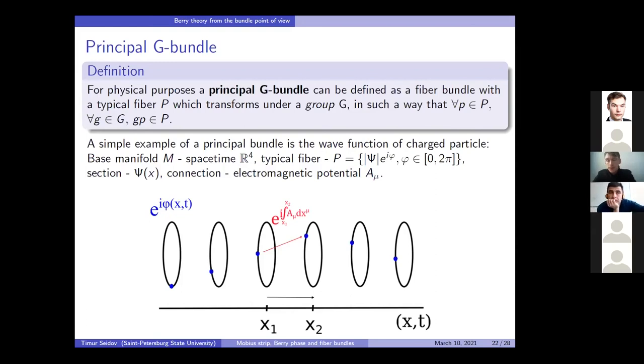In the figure, space and time are represented by a straight line for simplicity. Since the phase changes cyclically from zero to pi, we represent the fiber as a circle. The section corresponds to the choice of the phase at each point of space and time, that is the specification of a wave function.